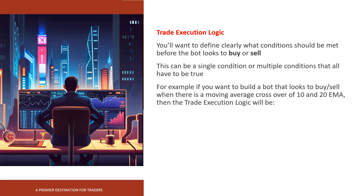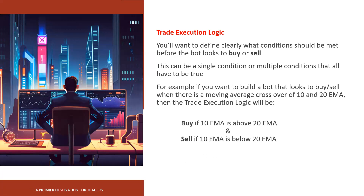We'll be using the moving average crossover as our decision maker for buying or selling. We're going to use the 10 and the 20 exponential moving average: when the 10 EMA crosses above the 20, we look to buy, and when the 10 EMA crosses below the 20, we look to sell. That is our trade execution logic.